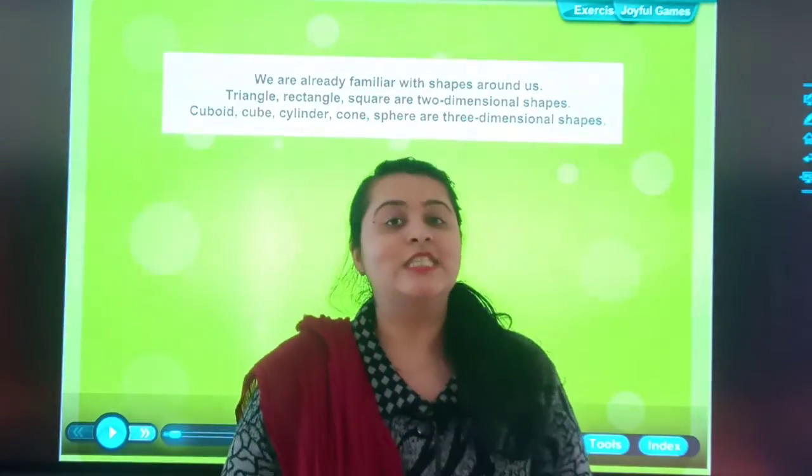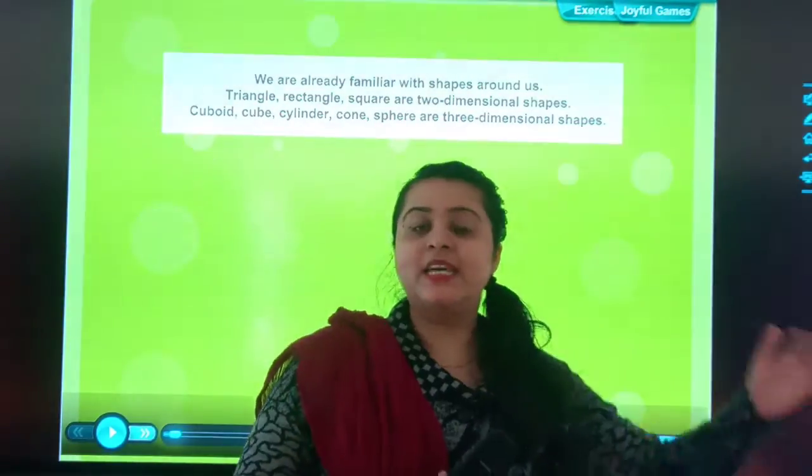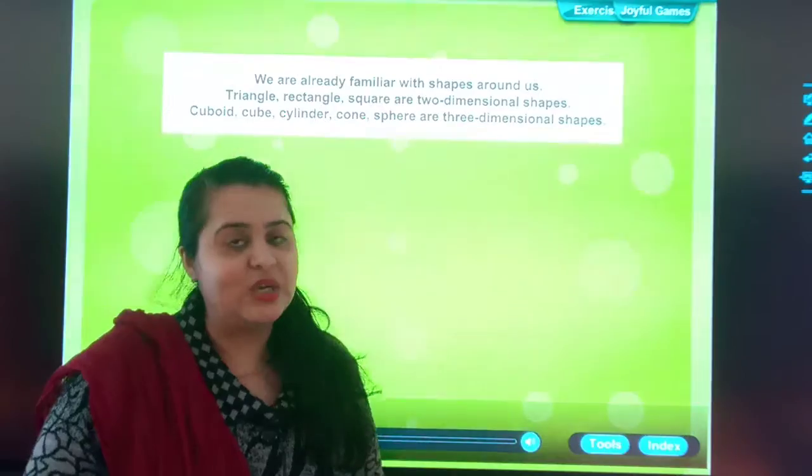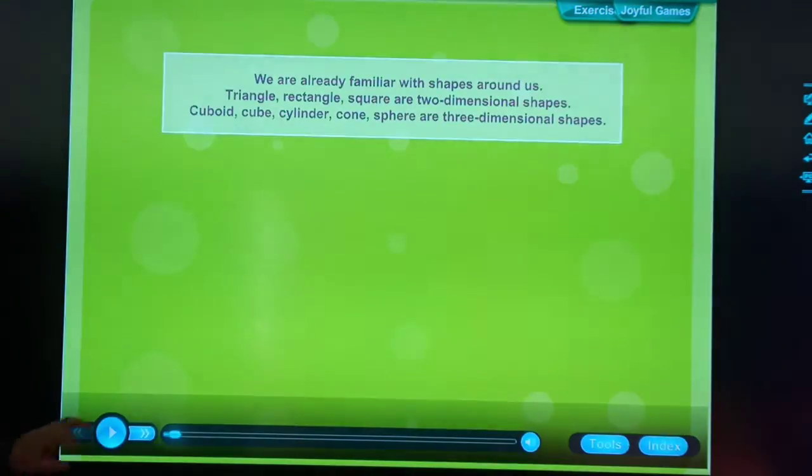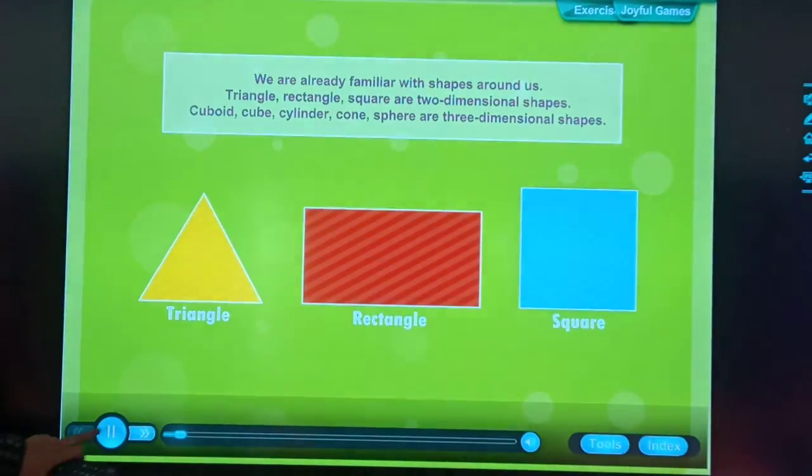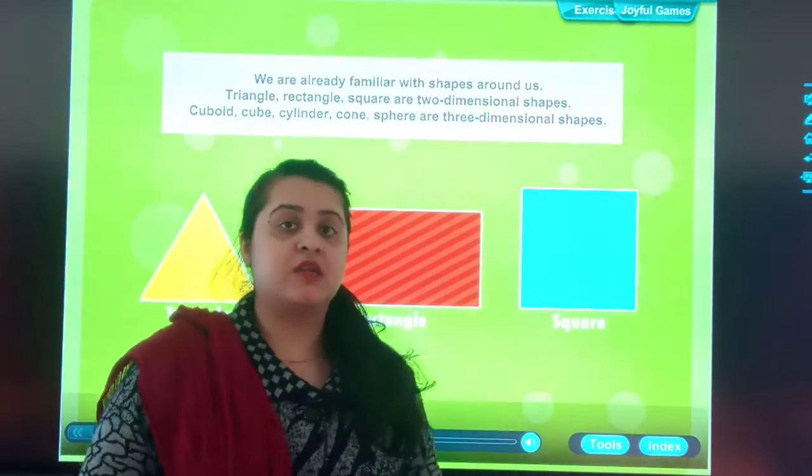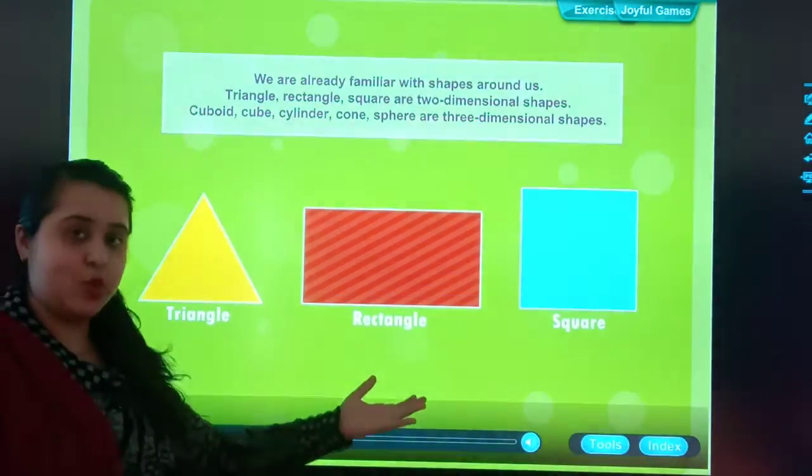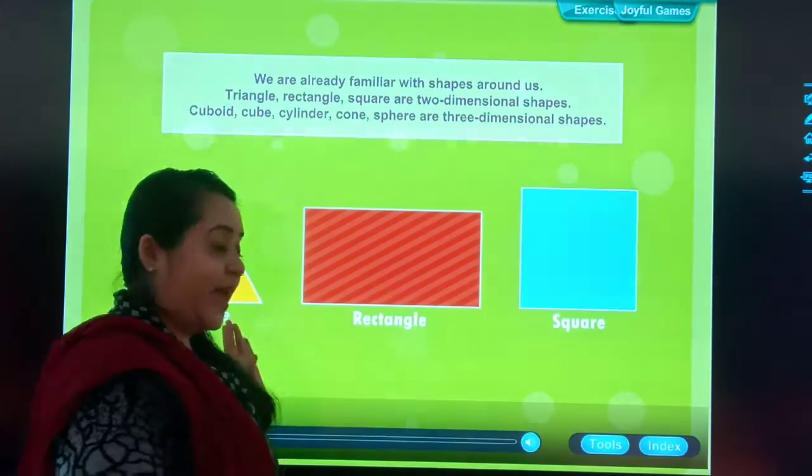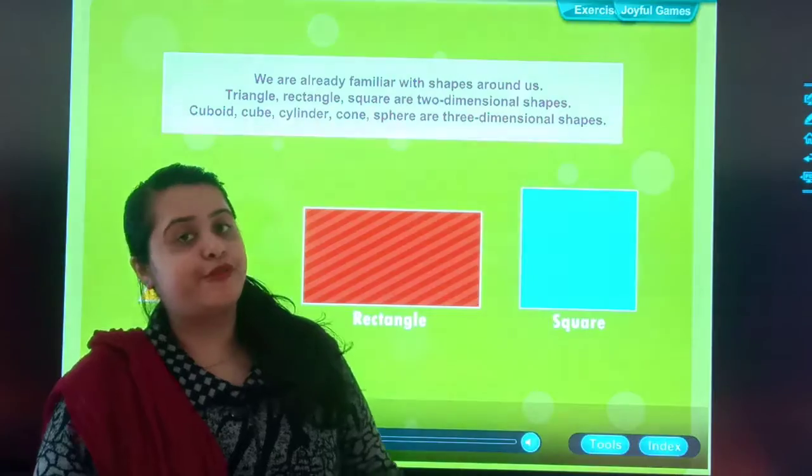So students, today we will have a little introduction part and then we will be going through our main topics of this chapter. Okay students, please carry a textbook along with you. We are already familiar with shapes around us. Triangle, rectangle, square. Students, we are already familiar with shapes around us. As you can see on this board, triangle, rectangle and square are two dimensional figures.